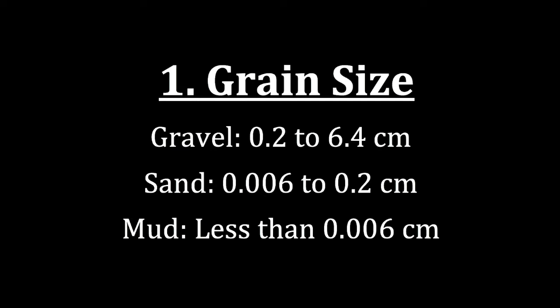The first and one of the most important properties to look at when analyzing clastic sedimentary rocks is grain size. For our purposes, we're only going to identify three different sizes. In reality, in geology, there are actually several different sizes, but at the introductory level, we're going to simplify it to these three.